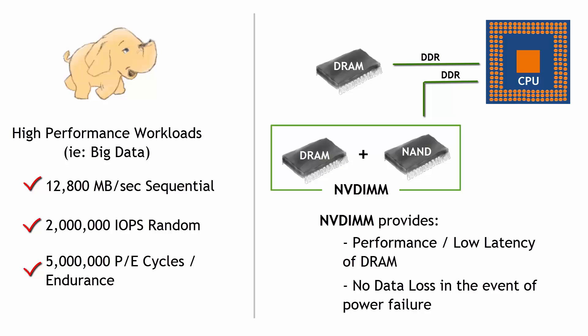NVDIMM, as you see here on the screen, is really a combination of the best of two worlds: DRAM and NAND. So you put those together — you get the volatile state but high, high performance of DRAM and the non-volatile state of NAND, with high performance as well there. Push those both together, but of course NAND is non-volatile.